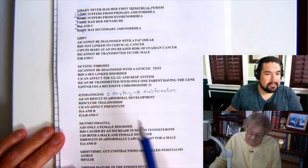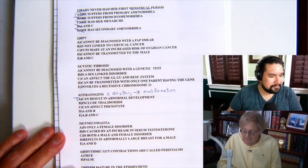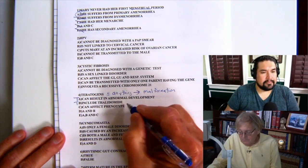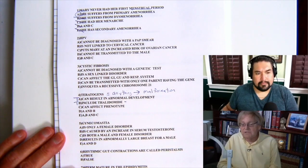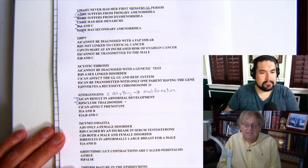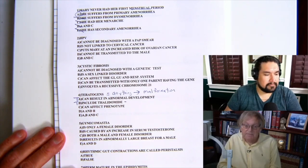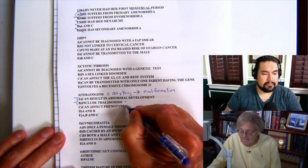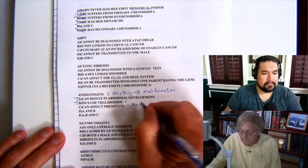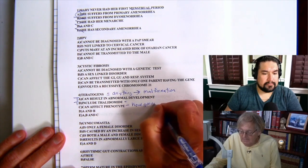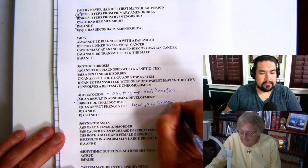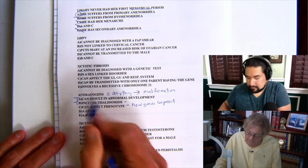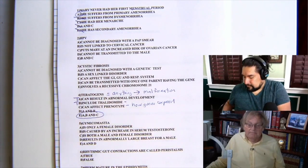It includes thalidomide — that's true, because thalidomide was actually the first to coin the term. It was given to women for morning sickness and kids were born without limbs. Teratogens can also affect the phenotype — how genes are expressed, what the child looks like. So the correct answer is all of the above: A, B, and C.